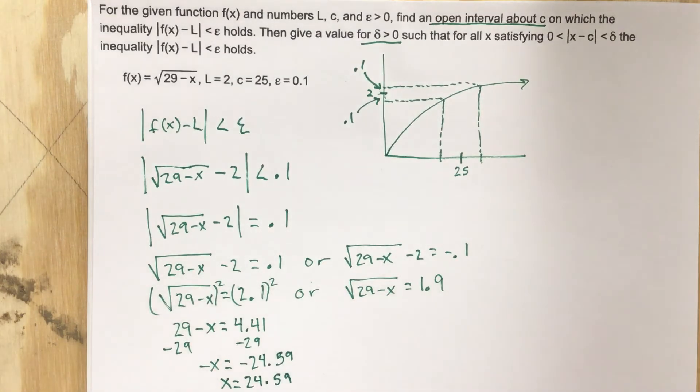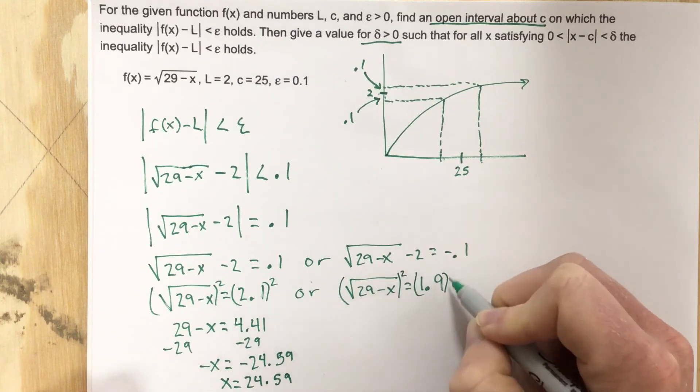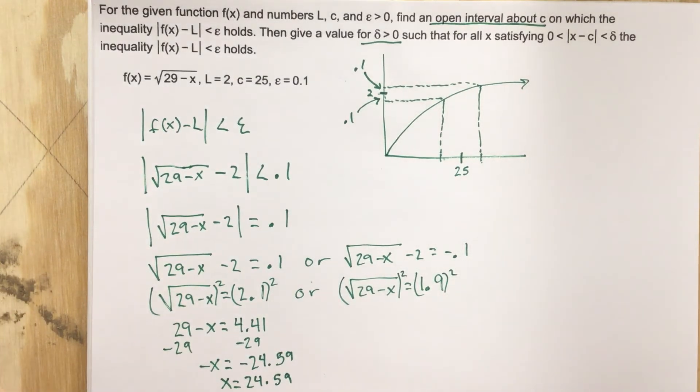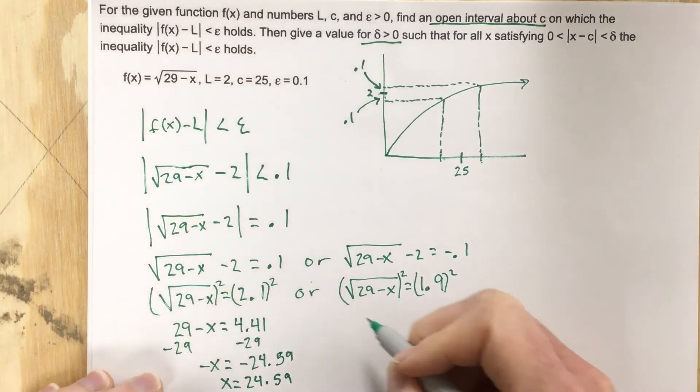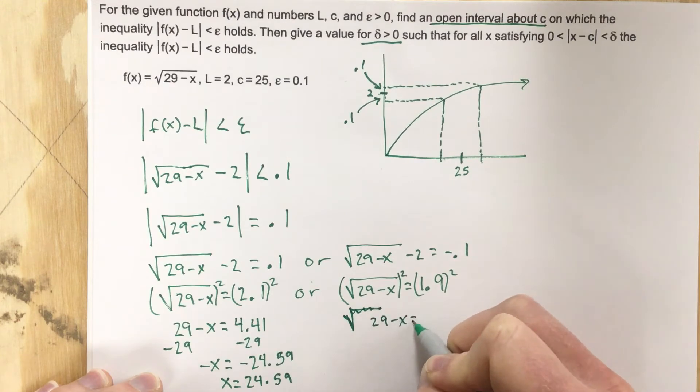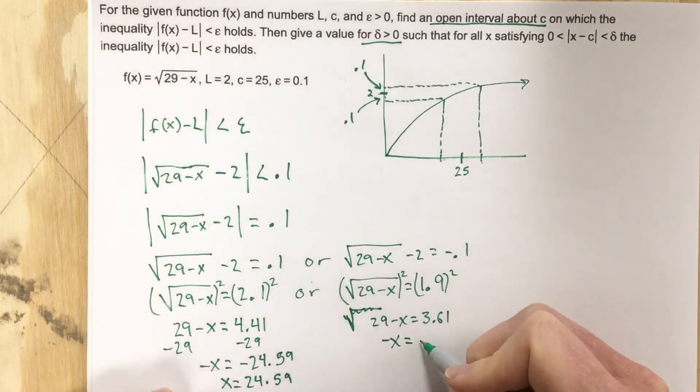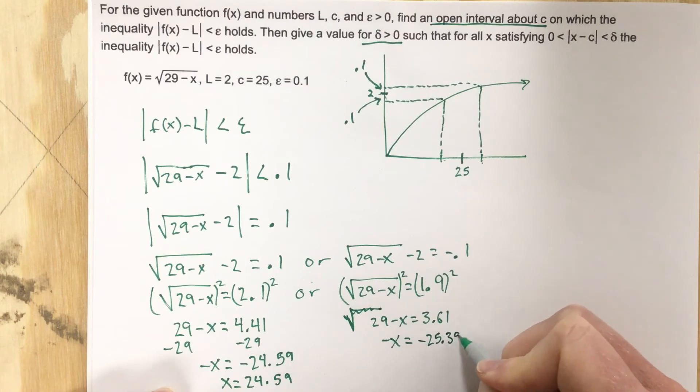Alright, so that's one of our x values. Or, when we square this side, 1.9² is 3.61, so we get 29 - x = 3.61. Subtract 29 over, so we get -x = -25.39. Divide by negative, I get x = 25.39.